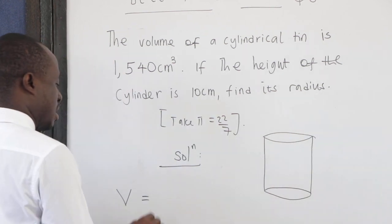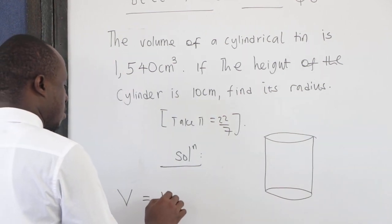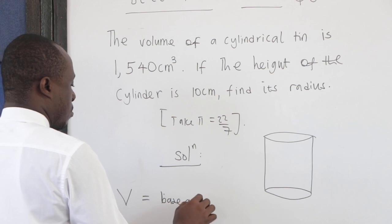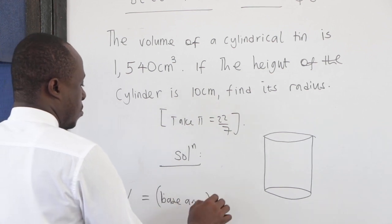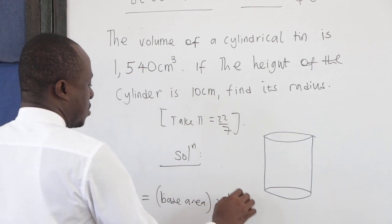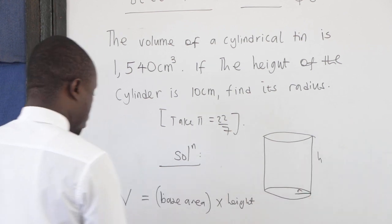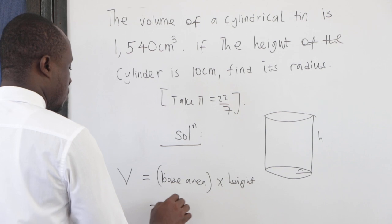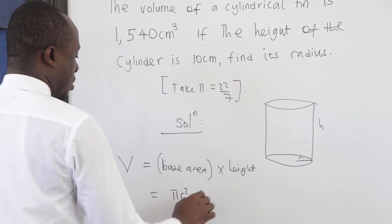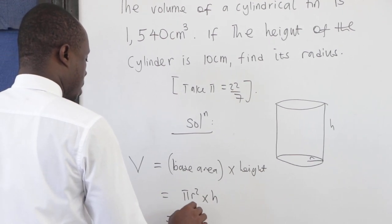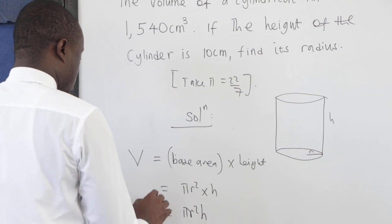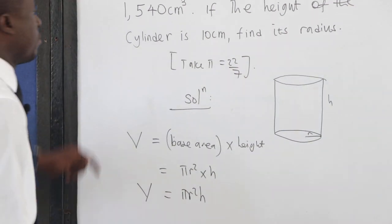And the base area is a circle, so you see this area times the height - that's the volume. So the base area is a circle, you see πr², and then h. So you can see that πr²h - that is the volume.